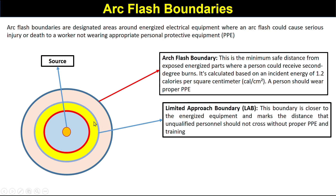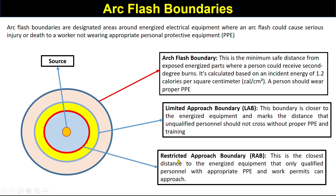The limited approach boundary is closer to the energized equipment and marks the distance that an unqualified person should not cross without proper PPE and training. The restricted approach boundary is the closest distance to the energized equipment — only a qualified person with appropriate PPE and a work permit can approach this zone.